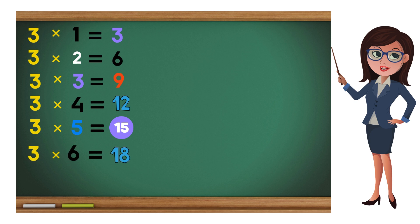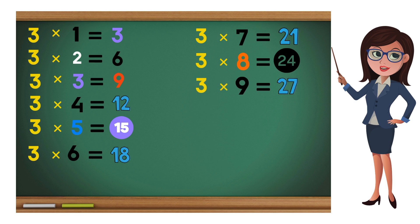3 times 6 equals 18. 3 times 7 equals 21. 3 times 8 equals 24. 3 times 9 equals 27. 3 times 10 equals 30.